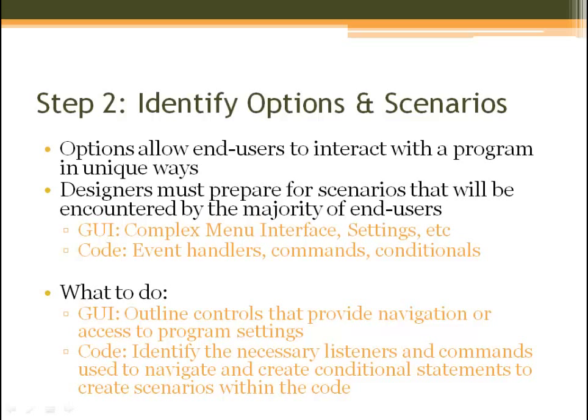Step 2: identify your options and scenarios. Options allow end users to interact with a program in unique ways, and designers must prepare for scenarios that will be encountered by the majority of end users. In the GUI, this would be a complex menu interface, settings, etc. In code, this would be event handlers, commands, and conditionals. For the GUI, outline the controls that provide navigation or access to program settings. In code, identify the necessary listeners, commands, and conditional statements to create scenarios.